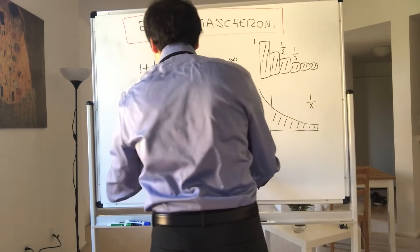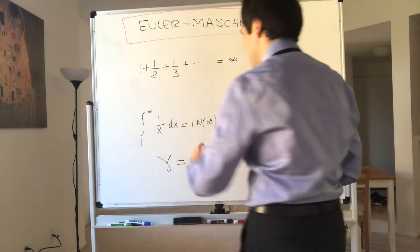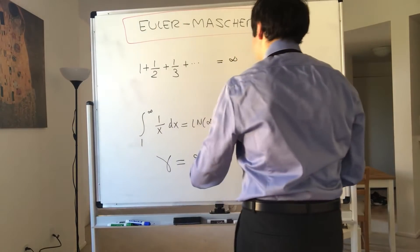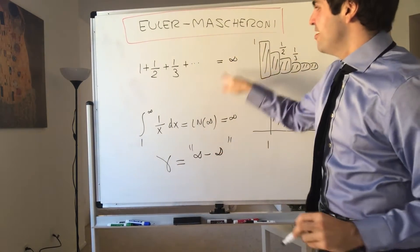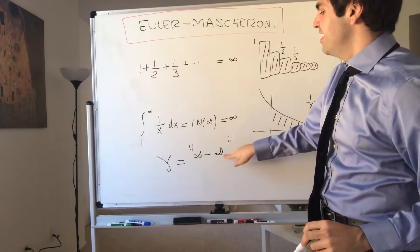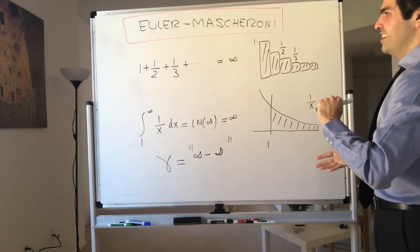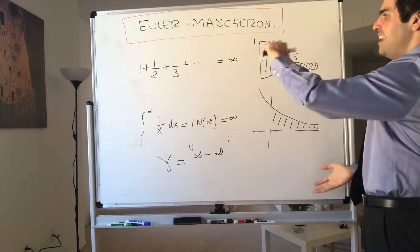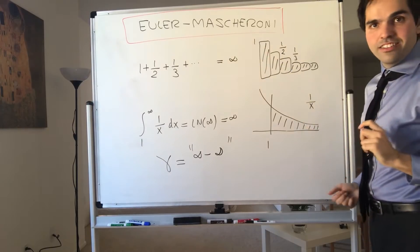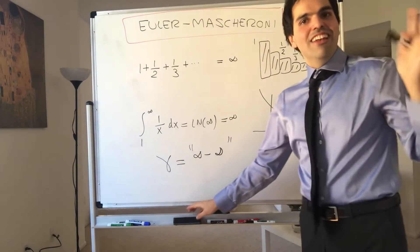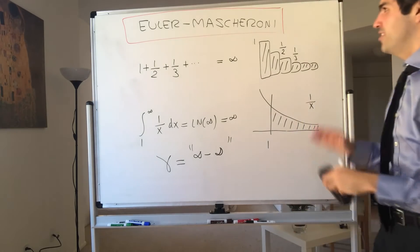So the Euler-Mascheroni constant is intuitively defined as infinity minus infinity — where by the first infinity we mean the sum of rectangles, and by the second we mean the integral. In other words, the Euler-Mascheroni constant is the limit of the difference of these areas in some sense. Let's make this precise by using partial sums.